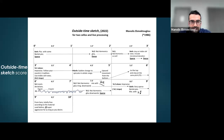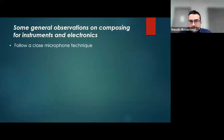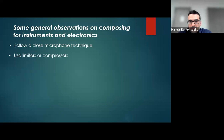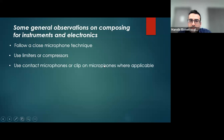Before we close, I would just like to take some time and offer some general observations on composing for instruments and electronics. Usually, when we capture the sounds of instruments to process them, we need all the amplitude we can get. For this reason, it is imperative we follow a closed microphone technique — otherwise the resulting sound material will be poor. Also, amplitude can reach a peak in live processing. When we process sound in real time, things can become really loud, causing unwanted sound distortion. For this reason, it is also imperative we apply a limiter for each of the Ableton tracks, including the master.